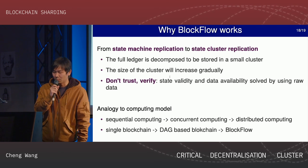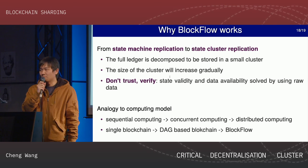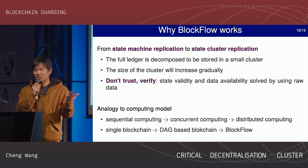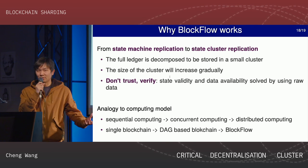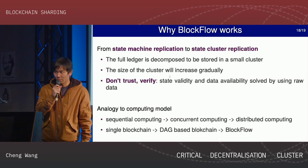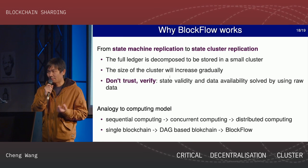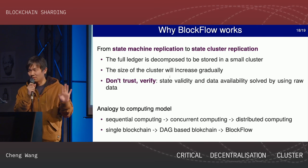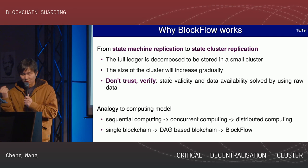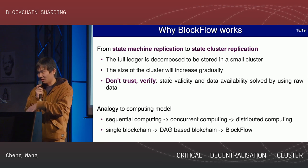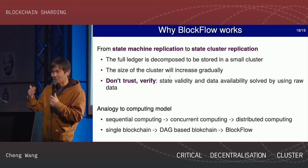Another way to look at this approach is to analyze it using the computing model analogy. We know that computing evolved from sequential computing to concurrent computing — basically multi-threading — and then to distributed computing, where a set of computers each does concurrent work. In blockchain, we have the single blockchain (Bitcoin, Ethereum), then some proposed DAG-based blockchains — though most DAG projects are not designed properly. BlockFlow is a distributed DAG blockchain, very much like the distributed computing evolution. Learning from this history gives us confidence that this approach makes sense.